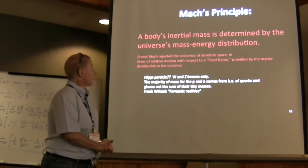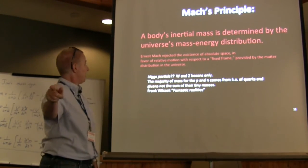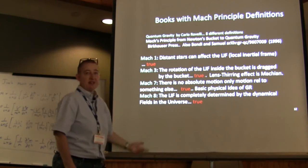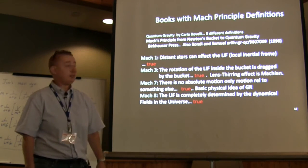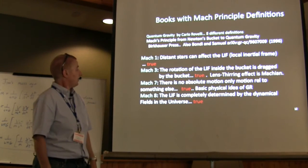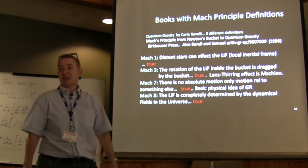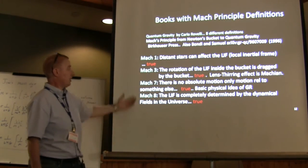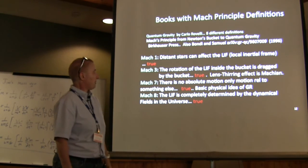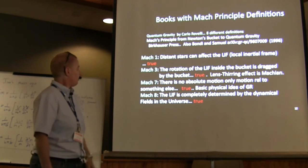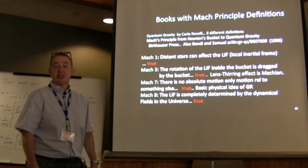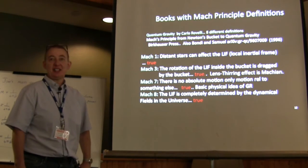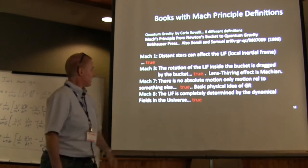Mach's principle: a body's inertial mass is determined by the universe's mass-energy distribution. It has been defined in several different ways — in one book there are about eight different definitions, and at least four of them apply to general relativity, as discussed in Rovelli's book on quantum gravity. For example: distant stars affect the locally inertial frame; the locally inertial frame inside a rotating bucket is dragged; and there is no absolute motion, only motion relative to something.